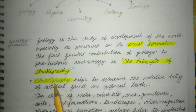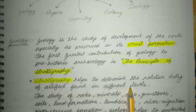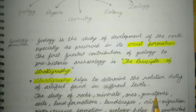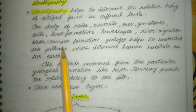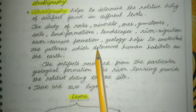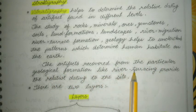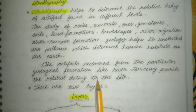Stratigraphy helps to determine the relative dating of artifacts found in different levels. The study of rocks, minerals, cores, stones, soils, land formation, landscapes, and river terrace formation — geology helps to understand the patterns which determine human habitat on the earth. Artifacts recovered from a particular geological formation like river terracing periods provide the relative dating to the site.